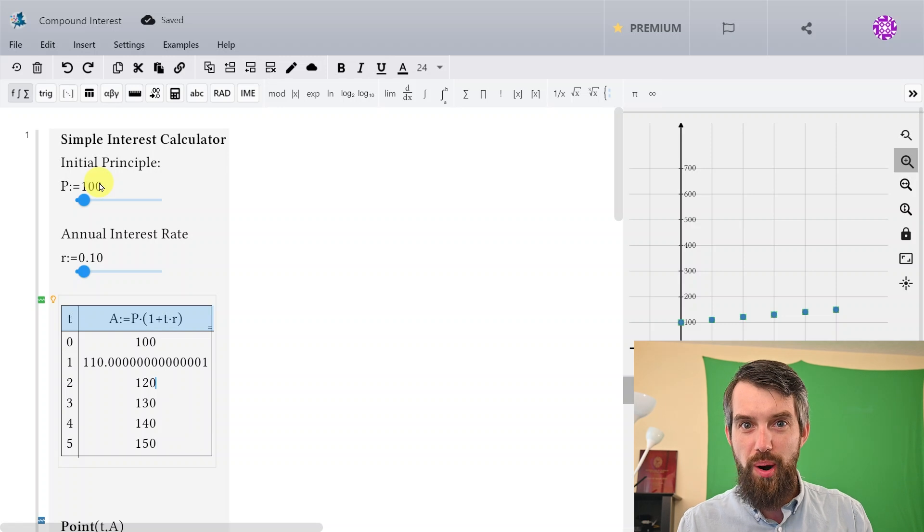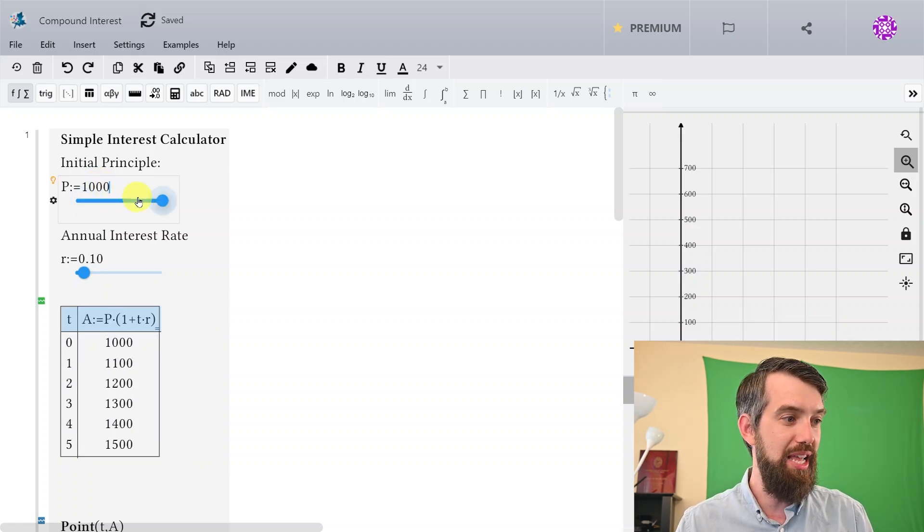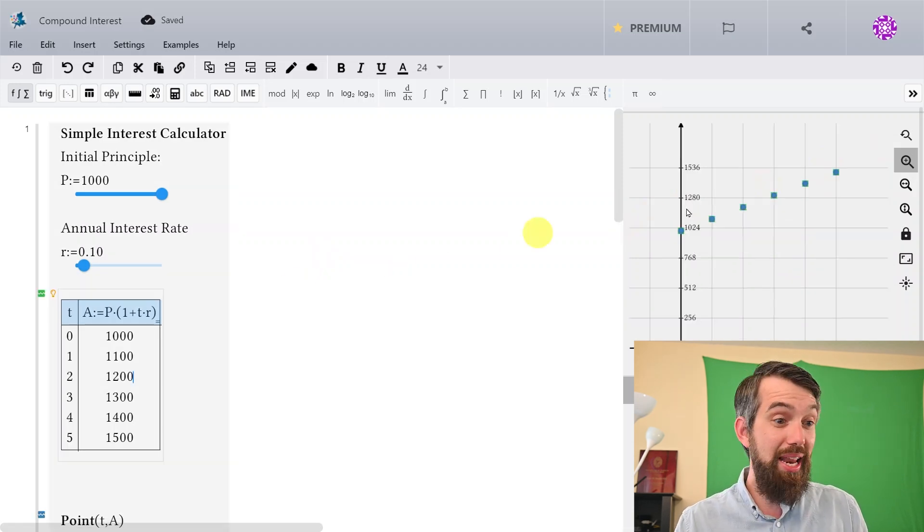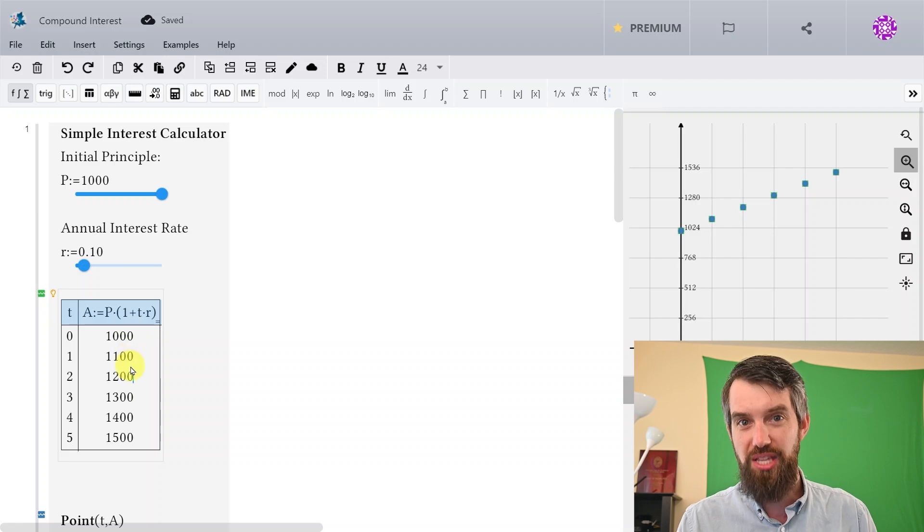And the most important part about simple interest is it doesn't matter what you start with. I could start this at a thousand, for example. And if I do that, well, it has the same kind of growth pattern. Just the same amount. In this case, $100, not $10 now. But the same amount every single year. It's simple interest for a reason. It's pretty simple.